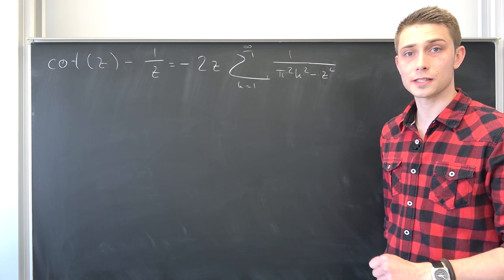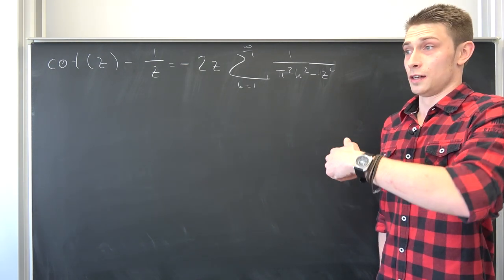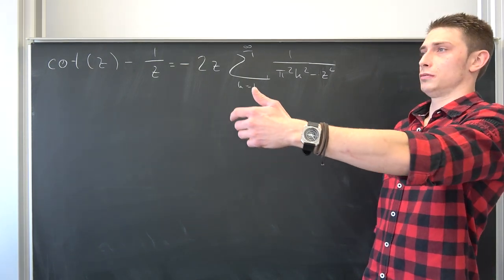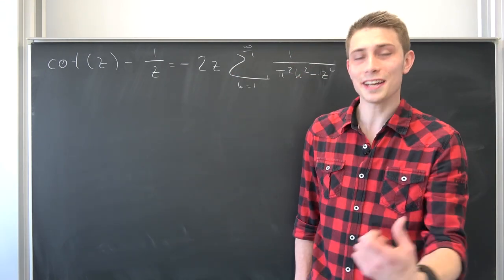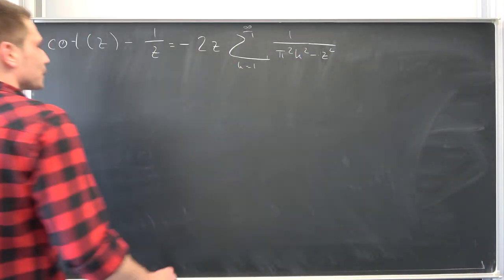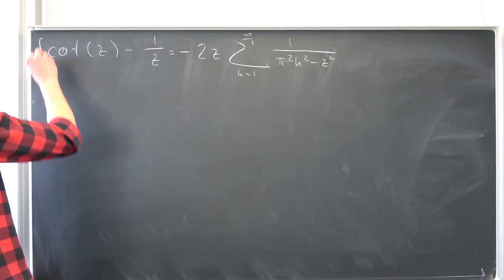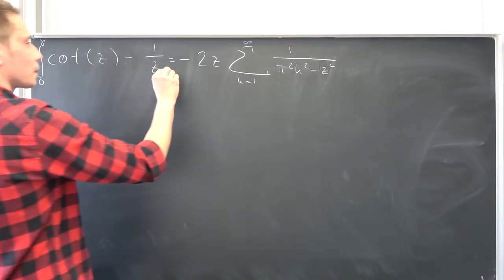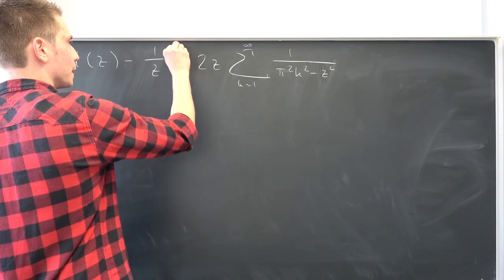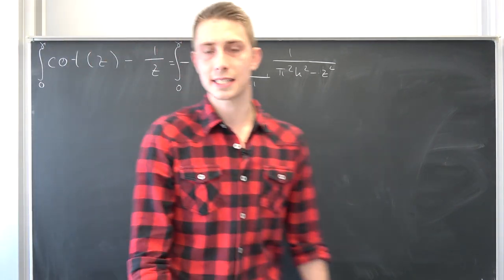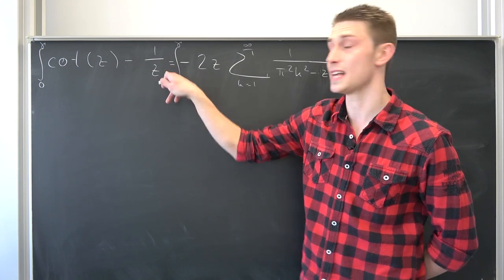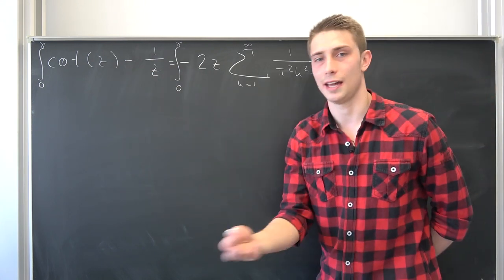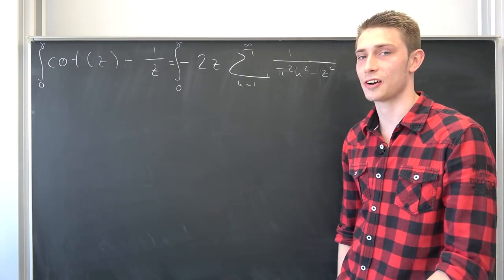Now integrating both sides on a certain interval from 0 to, which cool variable can we use today, from 0 to gamma. Why not use gamma? It's pretty dope. Integrating both sides from 0 to gamma, it's going to give us, let us deal with the left hand side today. Also don't forget the differentials dz, anything else wouldn't make too much sense.